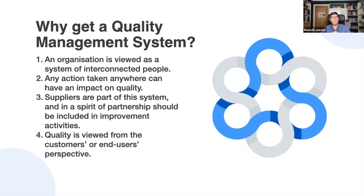Quality management takes a truly systemic approach, based on the belief that quality will come about only if all employees and all activities are involved. Four key points: first, an organization is viewed as a system of interconnected people; second, any action taken anywhere in the chain can impact quality; third, suppliers are an important part of this system and should be included in improvement activities; and fourth, quality should always be viewed from the customer's or end user's perspective.